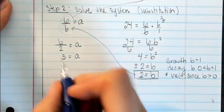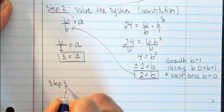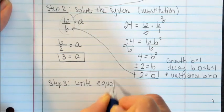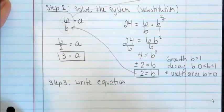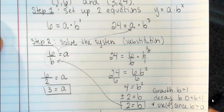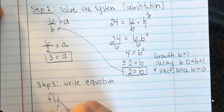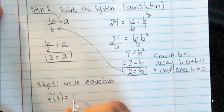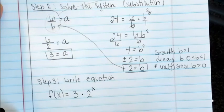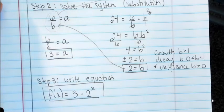That takes us to our last step. Step 3: write the equation. I know my a and I know my b — I just plug them back in. So f of x equals 3 times 2 to the x. There's my exponential function. Now let's try one that is a power function.